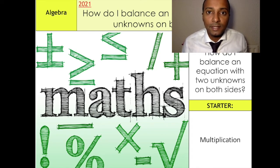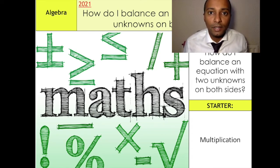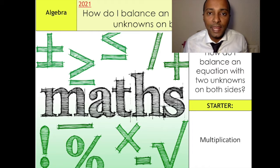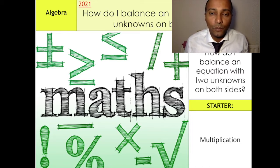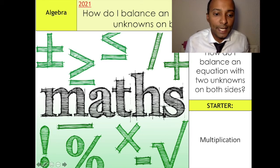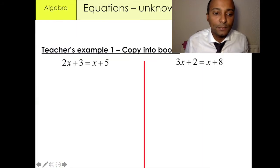Good evening, my name is Mr. Al-Hassan. In today's lesson, what we're going to be focusing on is how do I balance an equation with two unknowns on both sides. As always, I'm going to go through a couple of examples and then I'll put the questions on the board and then you can mark it. So what we have first is our first example.